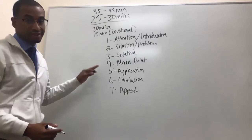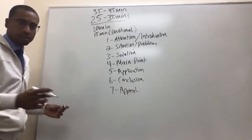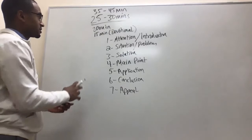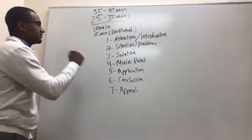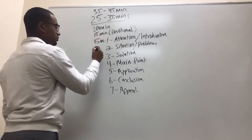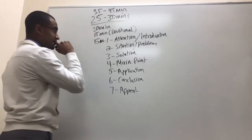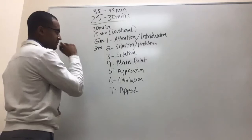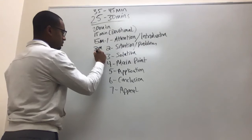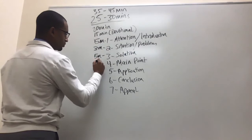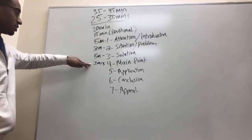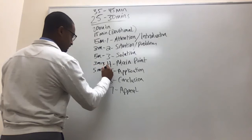This is how you put a sermon together straight to the point. Now think about timing — let's say you're doing it for 25 to 30 minutes. The introduction is about 5 minutes. The situation or problem you should be able to explain in at least 3 minutes. The solution you can give about 5 minutes. Breaking down the main point should be about 3 minutes — so now we're at 16 minutes. Application you want to give about 5 minutes.